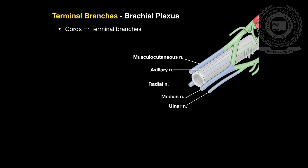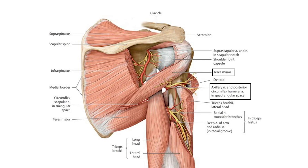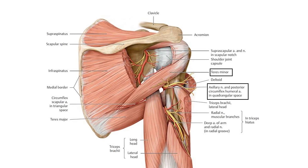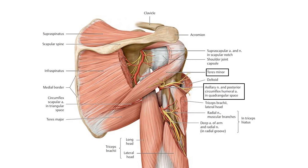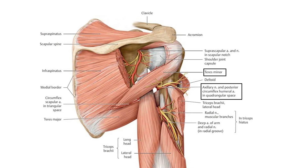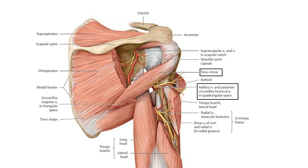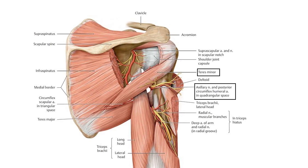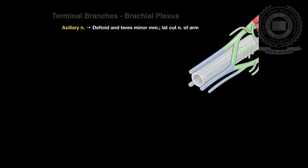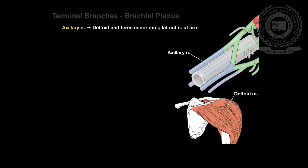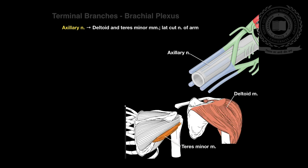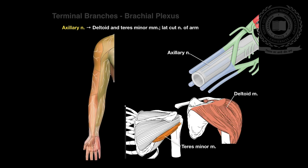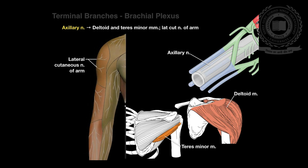Now let's talk in detail about each nerve. The axillary nerve is derived from the posterior cord. The axillary nerve leaves the brachial plexus at the lower border of the subscapularis muscle and continues along the inferior and posterior surface of the axillary artery. The axillary nerve serves as the motor innervation to the deltoid and teres minor muscles, which act at the glenohumeral joint. Sensory innervation is from the skin just below the point of the shoulder, and the axillary nerve continues as the superior lateral brachial cutaneous nerve of the arm.